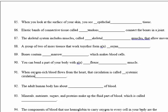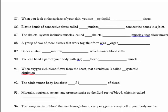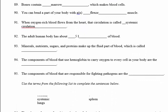Number 92: the adult human body has about 5 liters of blood. Number 93: minerals, nutrients, sugars, and protein make up the fluid part of the blood, which is called the plasma.